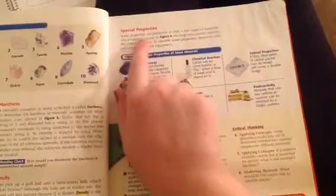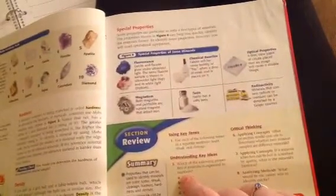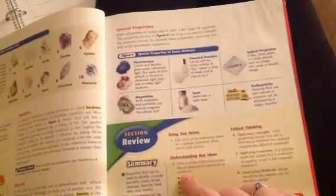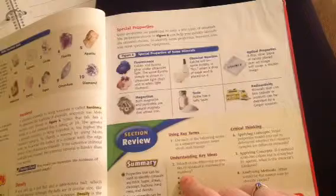Special properties. Some properties are particular to only a few types of minerals. The property shown in Figure 6 can help you quickly identify the minerals shown. To identify some properties, however, you need specialized equipment.